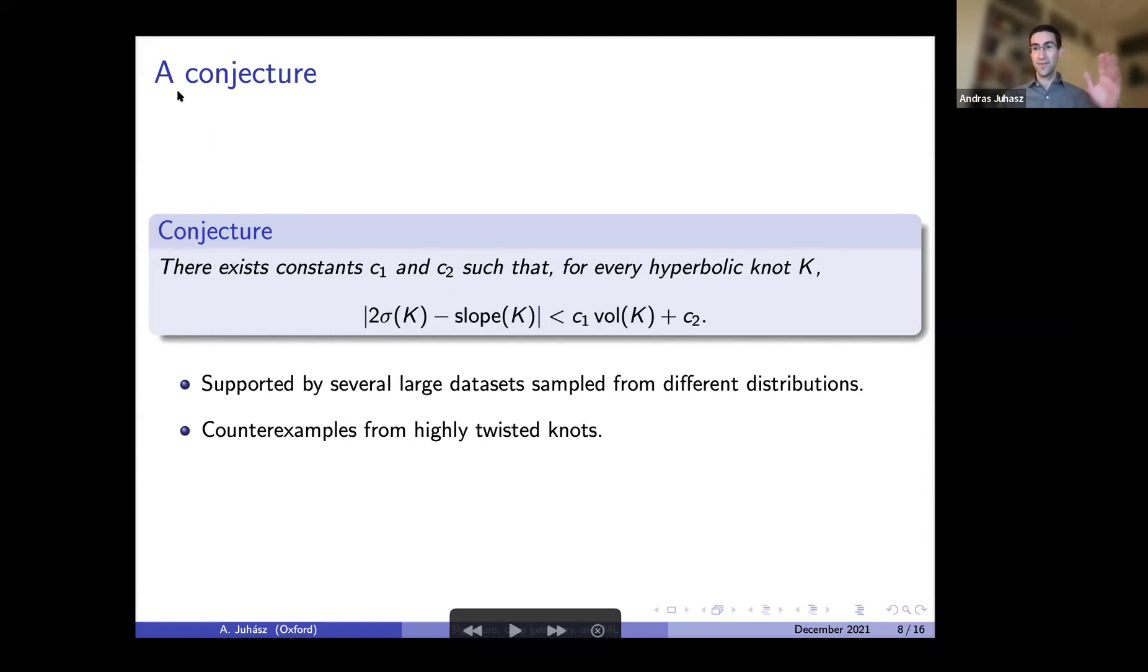This is an important caveat whenever you try to conjecture something using large data sets. There might be some counter examples lurking in some non-generic family somewhere. Statistics is a strange thing. Now I should mention that we still believe that asymptotically, almost surely, this twice signature minus the slope can be bounded by a linear function of square root of the volume. There is some reasonably good heuristic why that should be the case. So for a generic knot, this would be true.